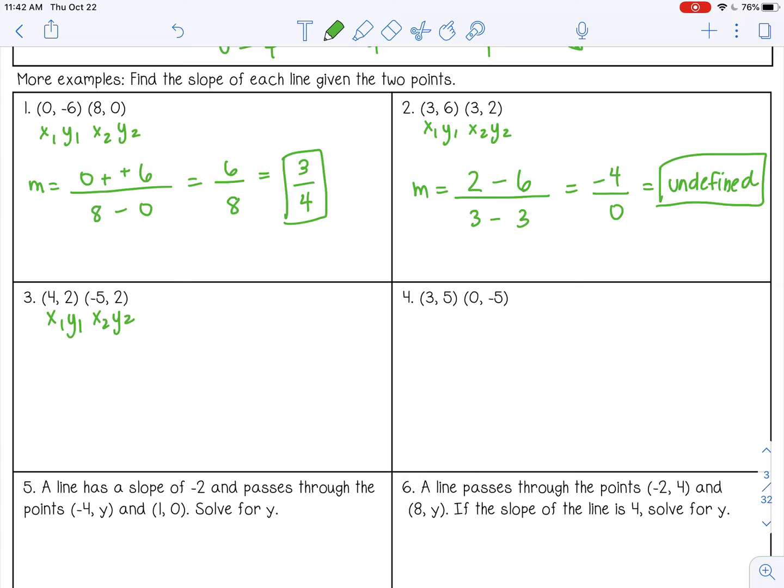Label my points. Go ahead and try 3 and 4 by yourself. If you need more time, feel free to pause the video. I'm going to go ahead and go over these. So y2 minus y1, x2 minus x1. 2 minus 2 is 0, and negative 5 minus 4 is negative 9. 0 divided by negative 9, that is 0. So if 0 is in the numerator, then your slope is 0, which remember means just a horizontal line. And on number 2, this would have been a vertical line.